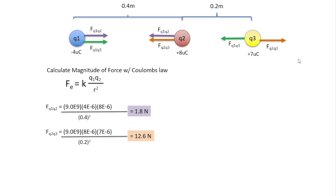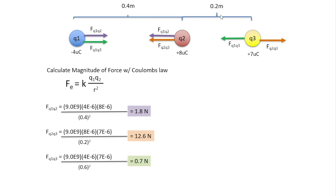Now let's take a look at F_Q1Q3. K is still 9 × 10⁹, Q1 is 4 × 10⁻⁶ (positive because we're only concerned with magnitude here), and Q3 is 7 × 10⁻⁶. The distance from Q1 to Q3 is 0.4 plus 0.2, which gives us 0.6 meters. We solve and find the magnitude of the force is 0.7 newtons.